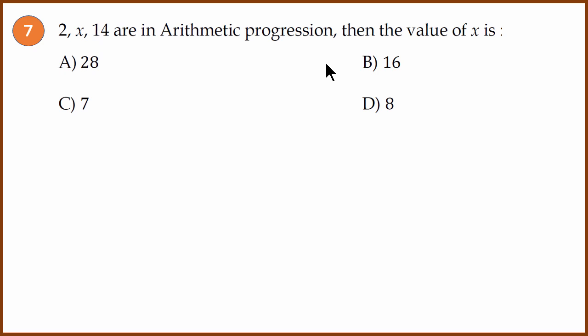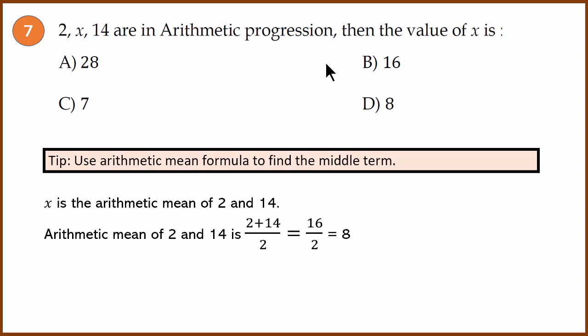Seventh question: Arithmetic mean question. 2, x, 14 are in arithmetic progression. The value of x is? These kinds of problems I recommend you solve using the arithmetic mean formula. The arithmetic mean formula is (a + b)/2. In this case it is (2 + 14)/2, which is 16/2, which is 8. The answer is 8.